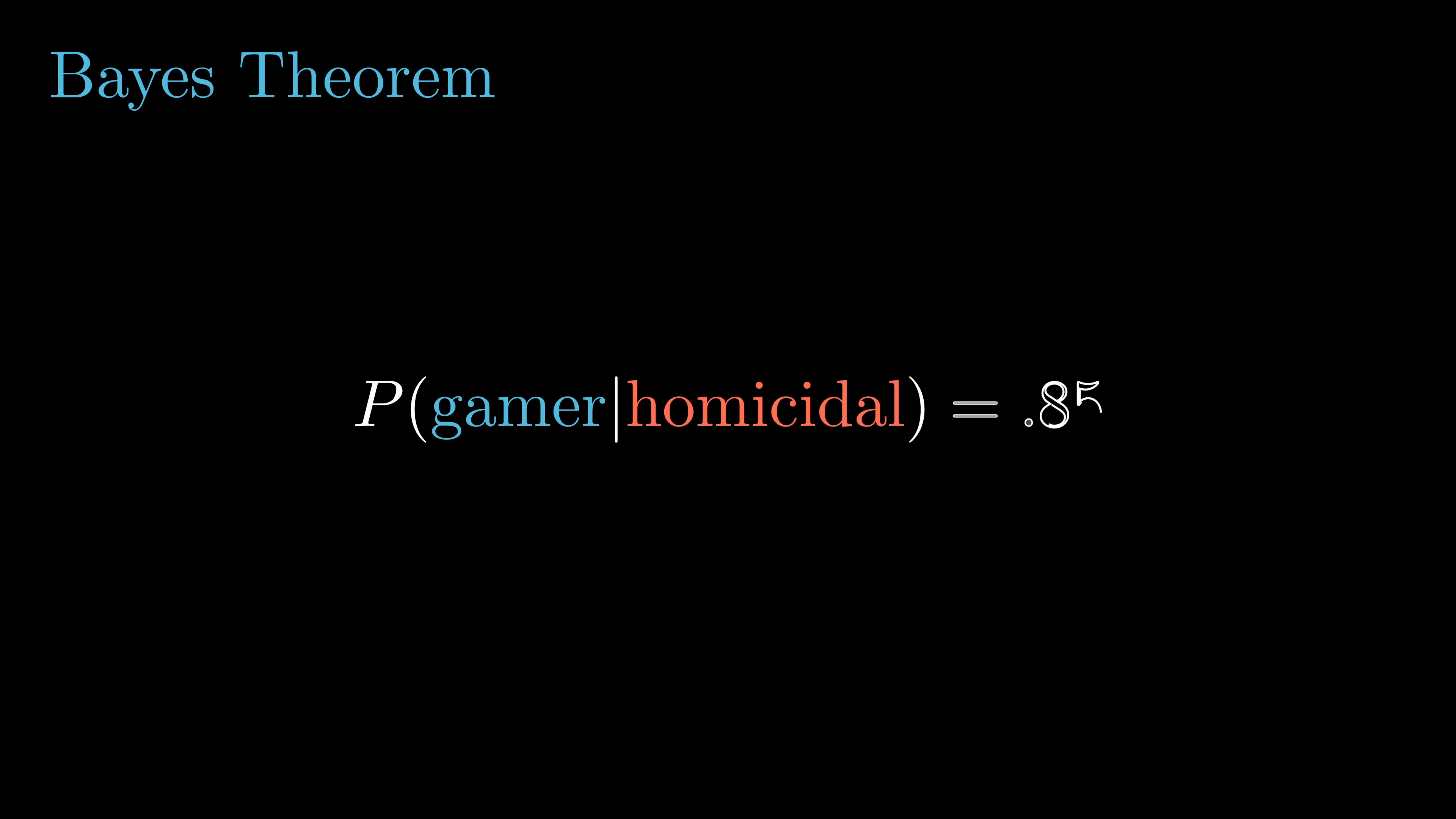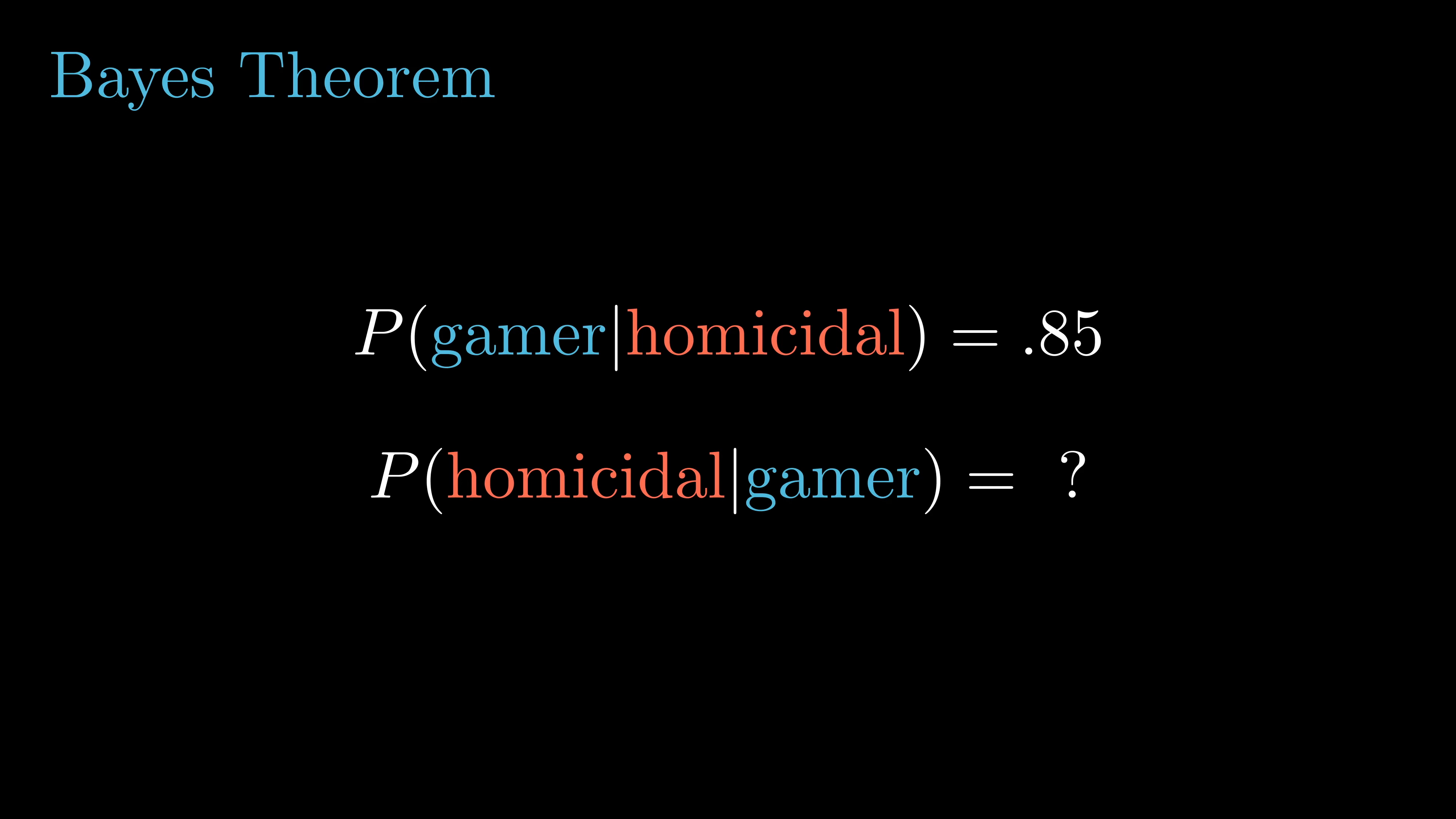Let's say there was a study that found that the probability of being a gamer given someone is homicidal is 0.85. So that is not the same as the probability of being homicidal given you're a gamer, and that's the real question we are interested in. You should not conflate these two conditional probabilities as being equal.